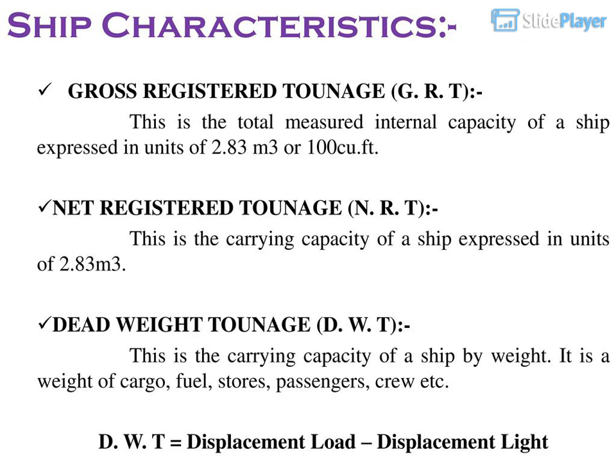Gross Registered Tonnage (GRT): The total measured internal capacity of a ship expressed in units of 2.83 cubic metres (100 cubic feet). Net Registered Tonnage (NRT): The carrying capacity of a ship expressed in units of 2.83 cubic metres. Dead Weight Tonnage (DWT): The carrying capacity of a ship by weight — it is the weight of cargo, fuel, stores, passengers, crew, etc. DWT = displacement load − displacement light.